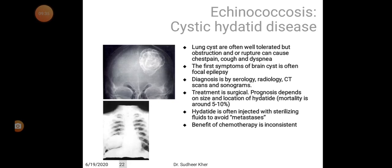Lung cysts are often well tolerated, but obstruction or rupture can cause chest pain, cough, and dyspnea. The first symptom of brain cysts is often focal epilepsy. Diagnosis is by serology, radiology, CT scans, and sonograms. Treatment is surgical. Prognosis depends on the size and location of hydatids. Mortality is around 5 to 10%. Hydatids are often injected with sterilizing fluids to avoid metastasis. The benefits of chemotherapy are inconsistent.